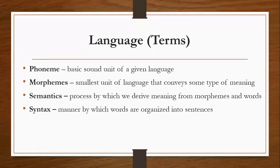Language is broken down into phonemes and morphemes. Phonemes are the basic sound unit of a given language — so 'a' and 'e,' for example, are phonemes. Morphemes, on the other hand, are the smallest unit of language that conveys some type of meaning. And interestingly enough, 'I' is both a phoneme and a morpheme.